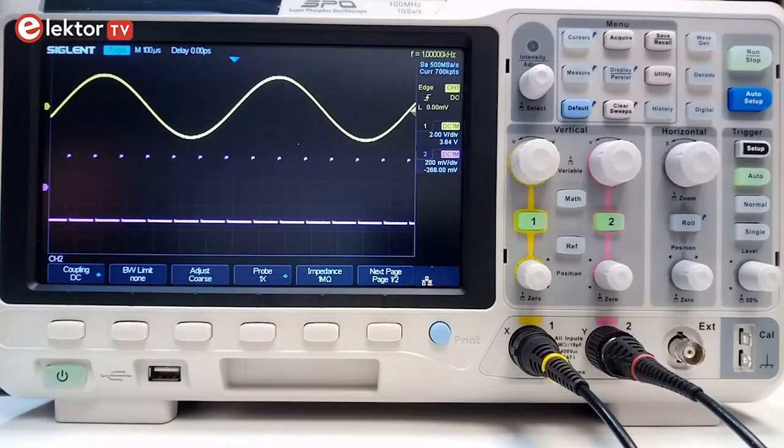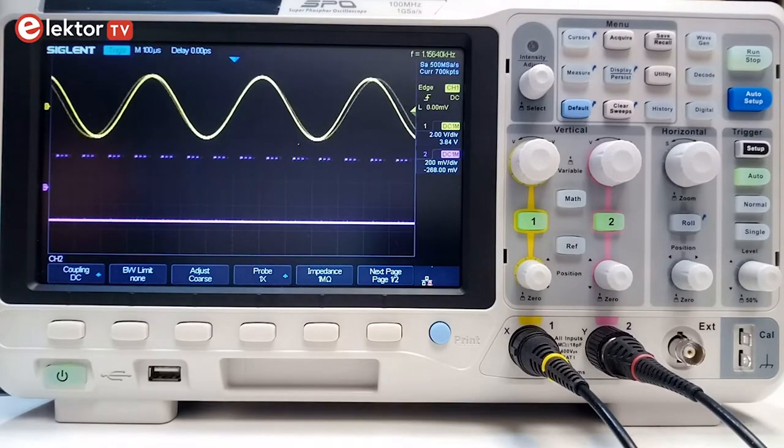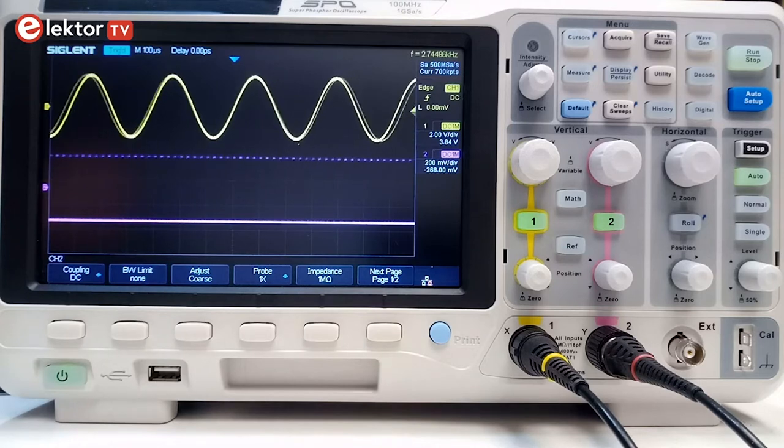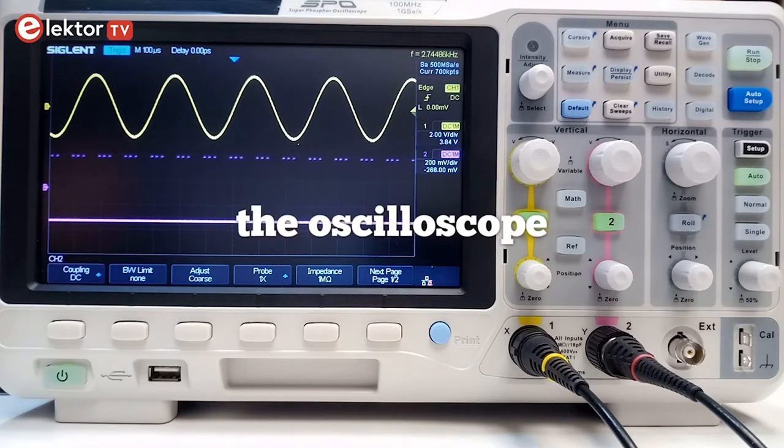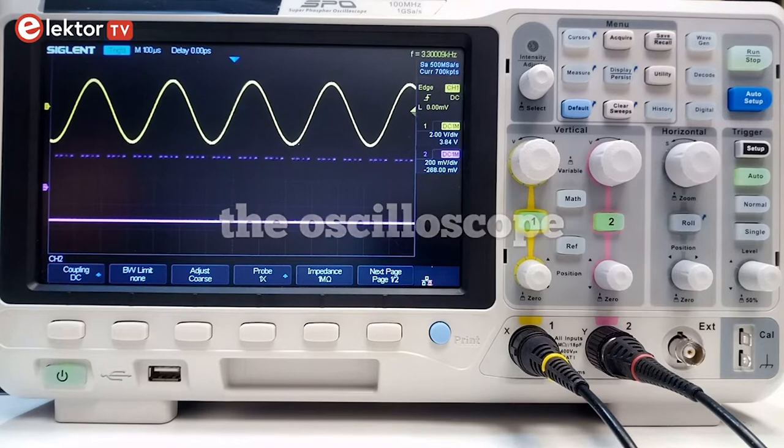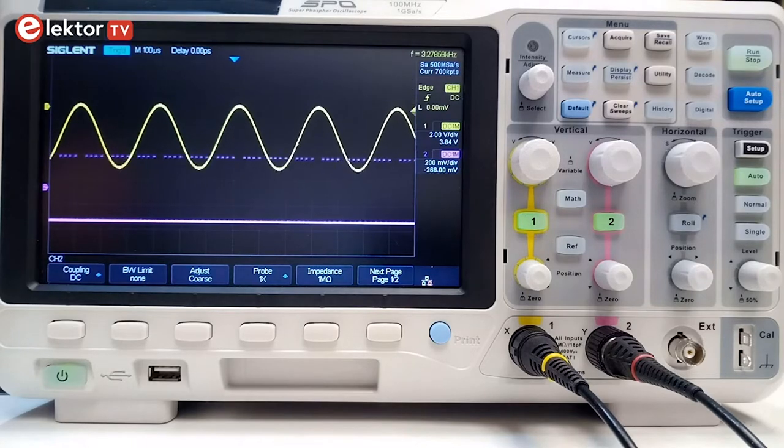When you have been tinkering with electronics for a while and your projects are getting more serious, chances are that you will need an oscilloscope. An oscilloscope is an instrument that displays the evolution of one or more voltages over time.